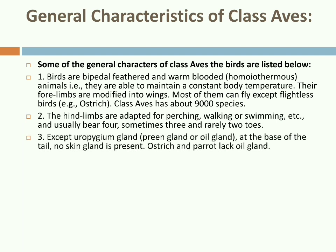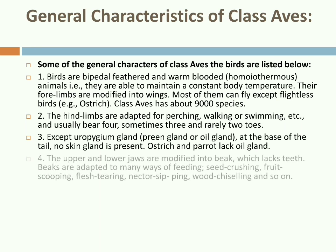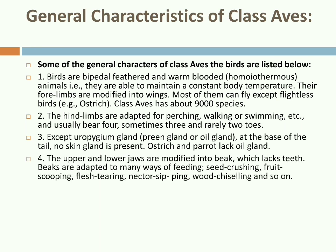Except for the uropygial gland — also known as the preen gland or oil gland — at the base of the tail, no skin glands are present on the body of birds. Ostrich and parrot lack the oil gland. The upper and lower jaws are modified into a beak, which lacks teeth. Beaks are adapted to many ways of feeding — such as seed crushing, fruit scooping, flesh tearing, nectar sipping, and wood chiseling — based on feeding habit.